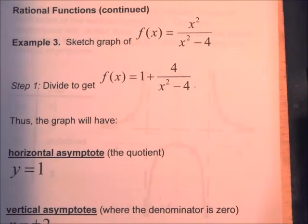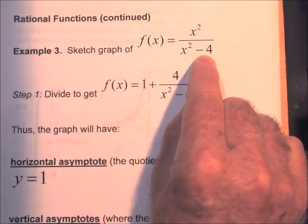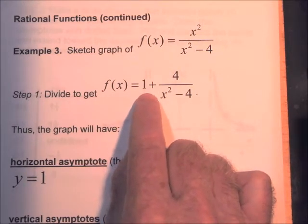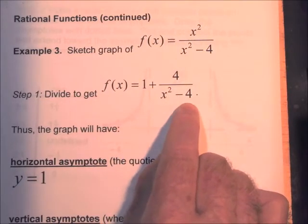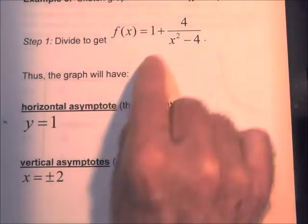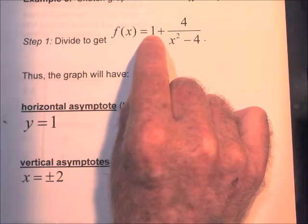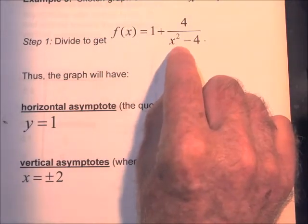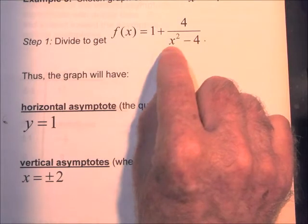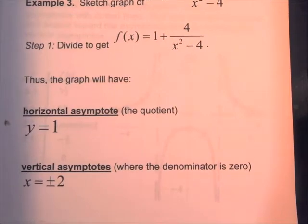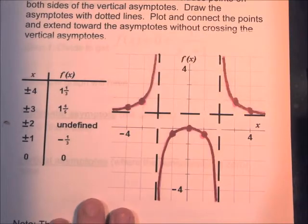Next example: f of x equals x squared over x squared minus 4. We do long division and get a quotient of 1 with a remainder of 4, so f of x equals 1 plus 4 over x squared minus 4. This gives a horizontal asymptote at y equal to 1 (slope 0). We also have two vertical asymptotes when the denominator is 0: x equal to 2 and x equal to negative 2. So this will not be a hyperbola — it has too many asymptotes, though the graph still doesn't cross them.